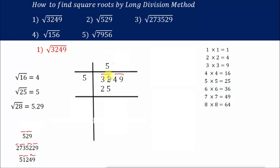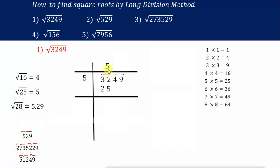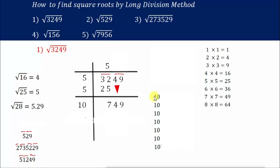So 5×5=25. After that, you always have to add that number here — 5+5=10. You subtract on this side: 32 minus 25 is 7. Then bring down 49, giving 749. From the next step onwards, you will use the number 10 here.